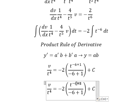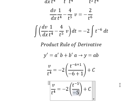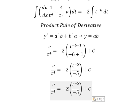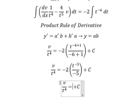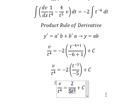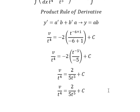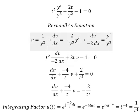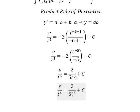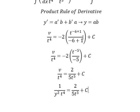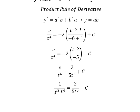We have negative 5 in the denominator, and we simplify. We can write v equal to this expression. This is the end — thank you for watching.